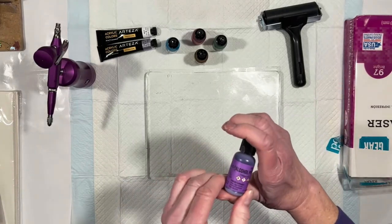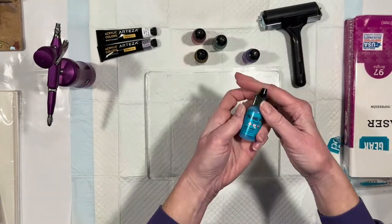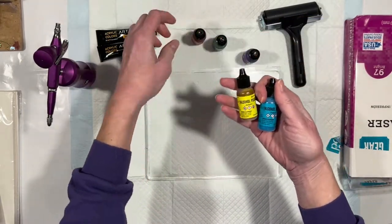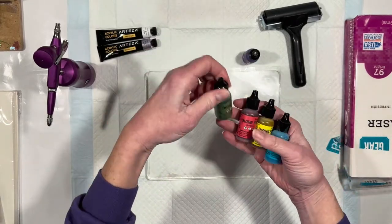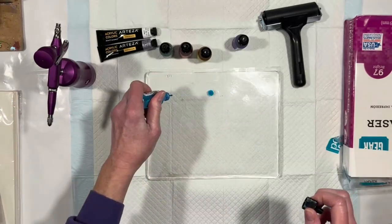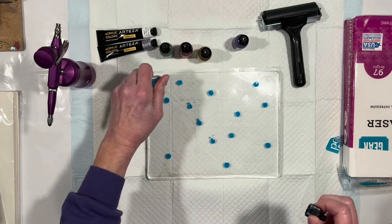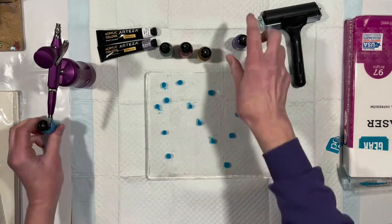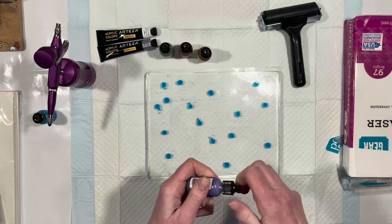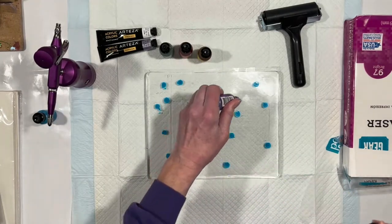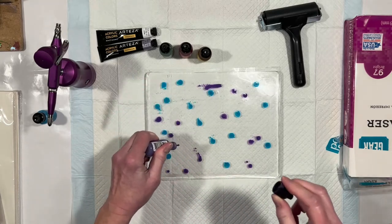These are Tim Holtz Ranger Pearl alcohol inks. So we have Villainous is the purple, Tranquil is the blue, Alchemy is the yellow slash gold, Deception is red, and Envy is green. No rhyme or reason. I have not played with my gel press nearly as much as I'd hoped to by now. So I don't really know what it does yet, except for what I've seen on other people's YouTube videos. So we're just going to have a play, as those wonderful Brits would say. Let's have a play.